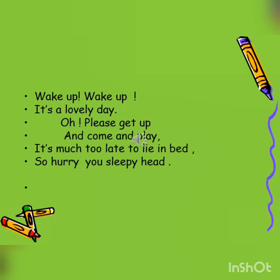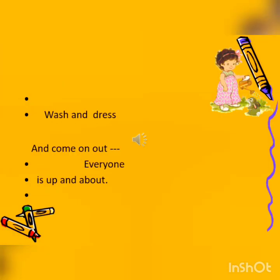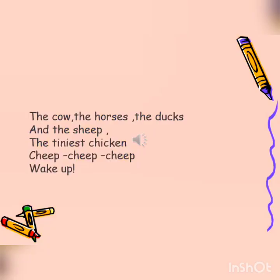Let's move on to the new words of this poem. The first word is lovely, which means very beautiful. The next word is buzzing, meaning humming sound. The next word is tiniest, which means very small. And the last word is sleepy head, which means a sleepy person. Now, children, you know the meaning of all these words, so you have to make one sentence from each word.